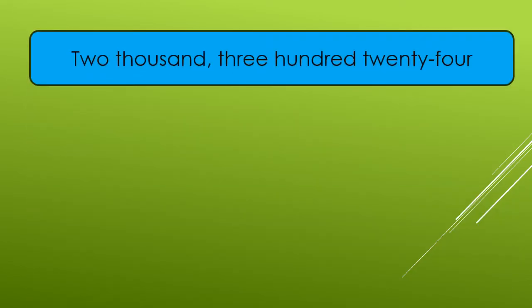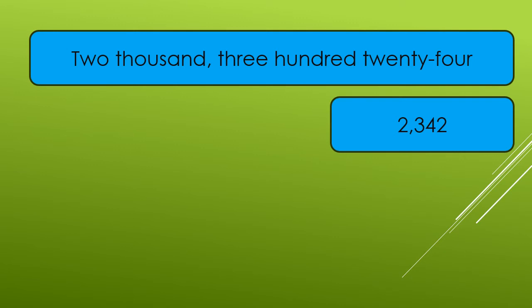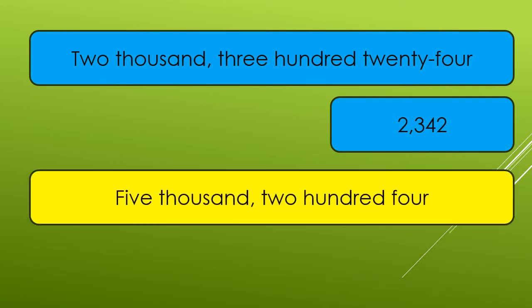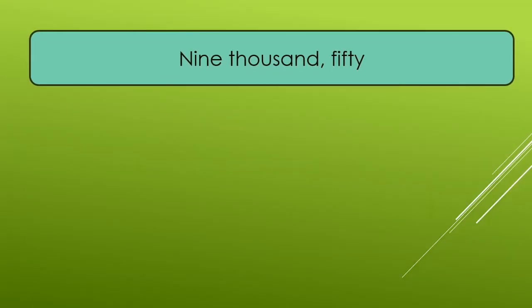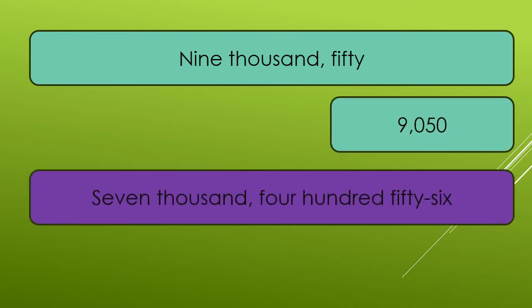This time, let's try if you really understand our lesson. I will be showing you numbers written in words — tell me that number in symbols. 2,324. We write it in symbols this way. 5,204. 9,050. 7,456.